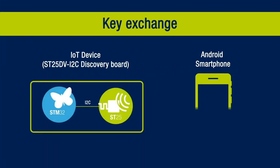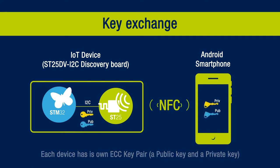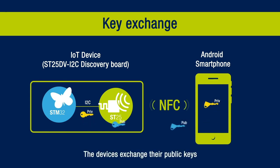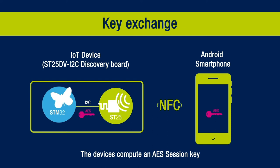The secure transfer channel consists of mutual authentication and encryption of data exchanged over NFC. Each device has its own ECC key pair — a public key and a private key. The devices exchange their public keys and then compute an AES session key. This AES session key will be different each time and cannot be found by someone observing the communication.